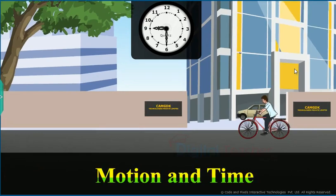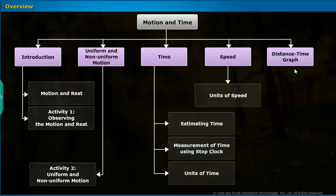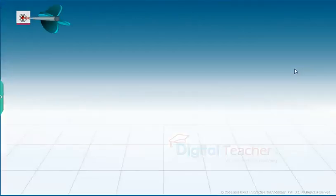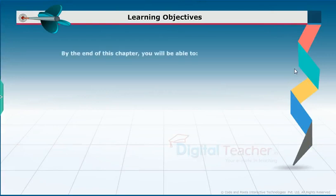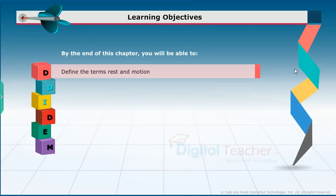Welcome to the chapter, Motion and Time. This slide presents the overview of the chapter: Learning Objectives. By the end of this chapter, you will be able to define the terms rest and motion, and differentiate between slow and fast motion.